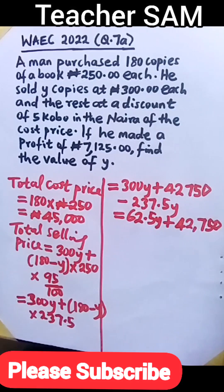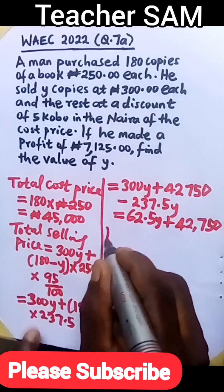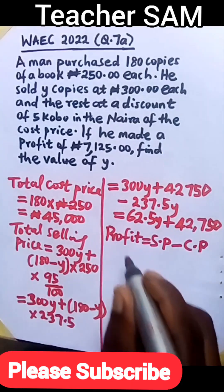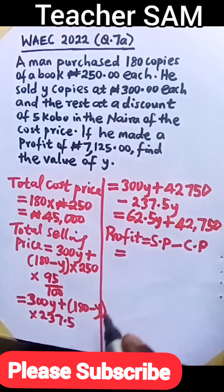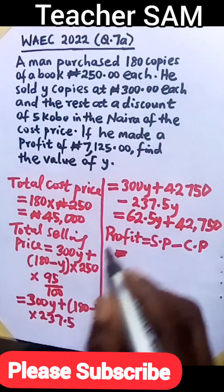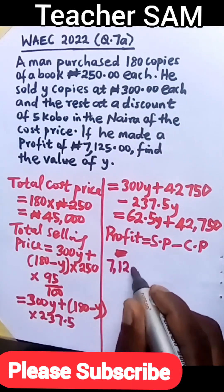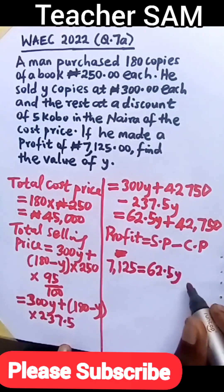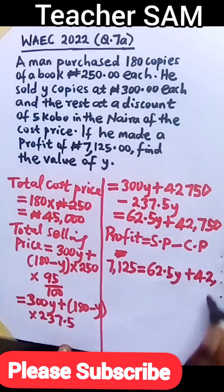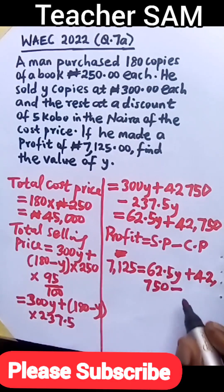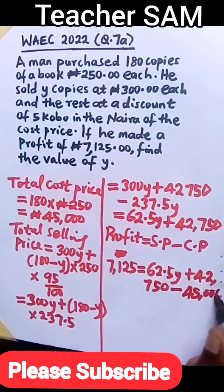Now we calculate for the value of Y. We know that profit equals selling price minus cost price. We were given that the profit is 7,125 naira. Substituting, we have: 7,125 equals our selling price, which is 62.5Y plus 42,750, minus our cost price of 45,000.